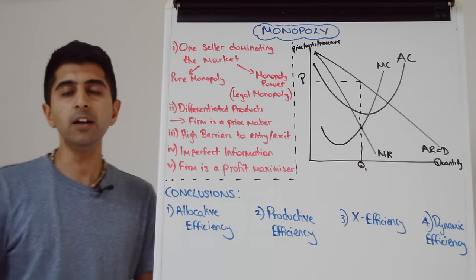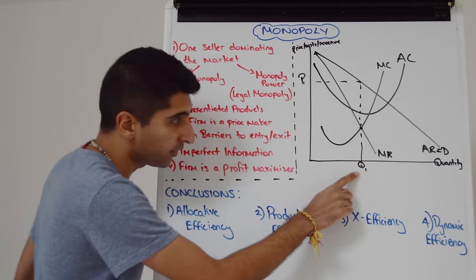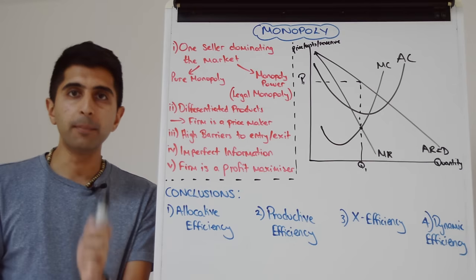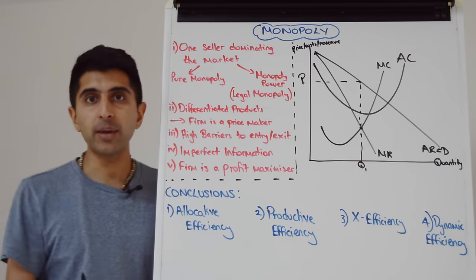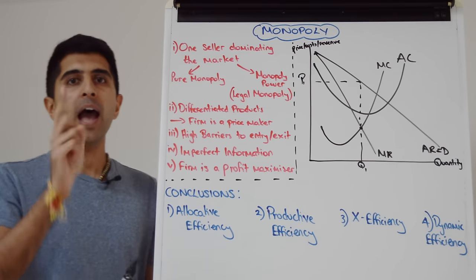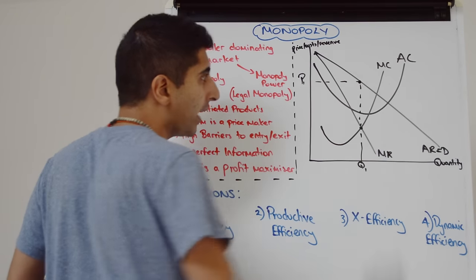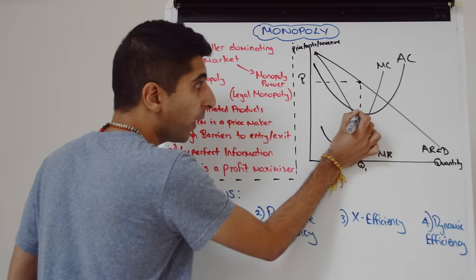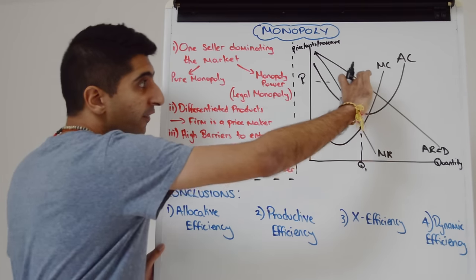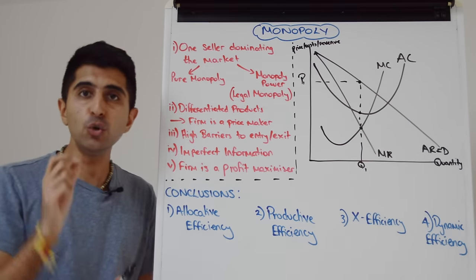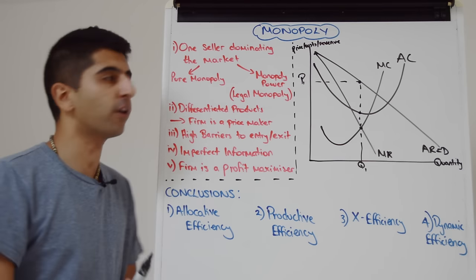The diagram isn't finished here. What we can work out is at quantity Q1, the level of profit the monopolist is making. To do that, we have to compare average revenue and average cost. Well, at quantity Q1, it's clear that average revenue is way up here. Average cost is way down there. The vertical difference between the two dots is the unit level of supernormal profit.